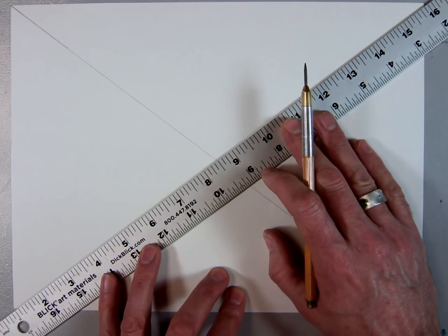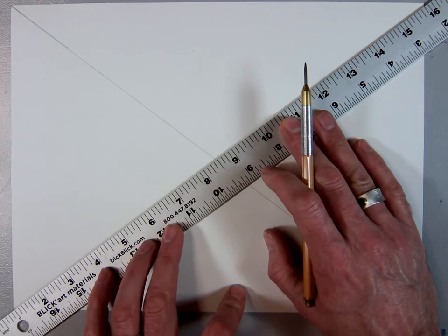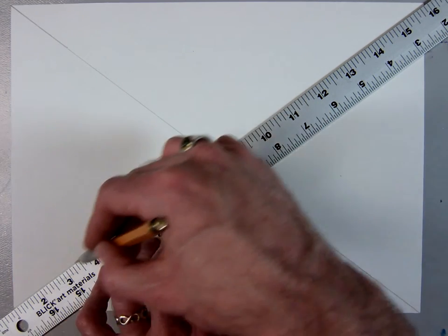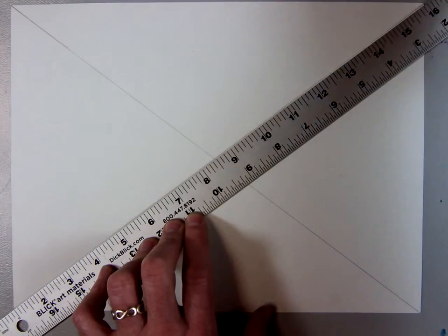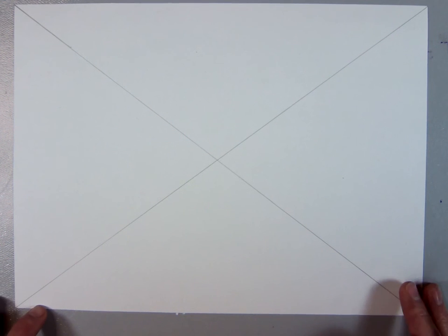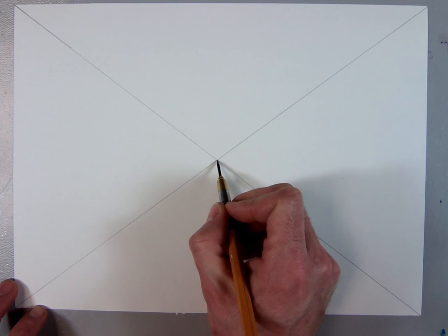Why I call it the true center is because it will be the center every time, no matter what size your rectangle, no matter what shape your rectangle, and even if your rectangle is going back into space in your drawing, you'll still be able to find the true center. I use this trick all the time when I'm thinking about composition so that I make sure I don't put anything directly in the center.